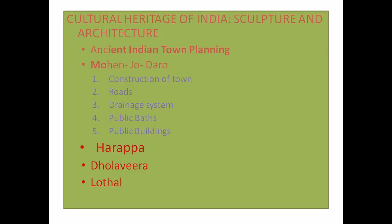The first point is ancient Indian town planning, consisting of sites like Mohenjo-daro, Harappa, Dholavira, and Lothal. Mohenjo-daro featured construction of a town, roads, drainage system, public baths, and public buildings.